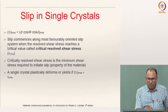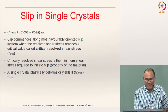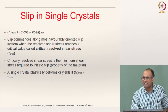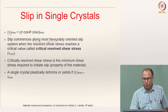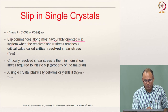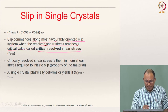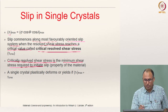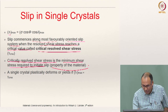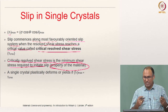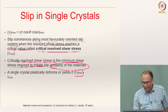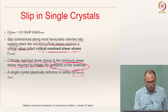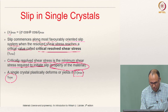The maximum resolved shear stress tau_r_max equals sigma × (cos phi × cos lambda)_max. Slip commences along the most favorably oriented slip system when the resolved shear stress reaches the critical resolved shear stress (CRSS), which is the minimum shear stress required to initiate slip and is a property of the material. A single crystal plastically deforms when tau_r_max equals tau_CRSS.